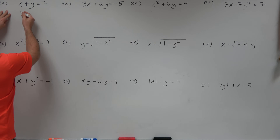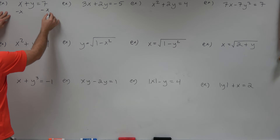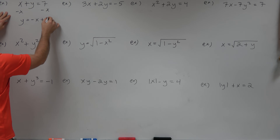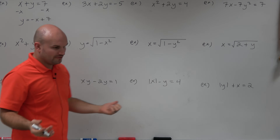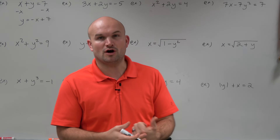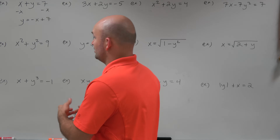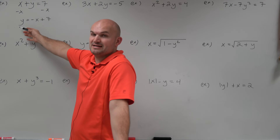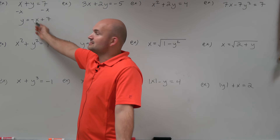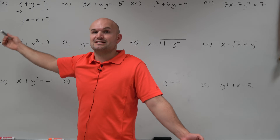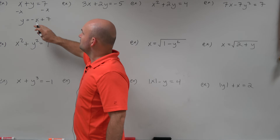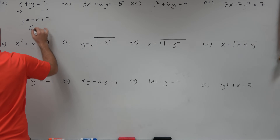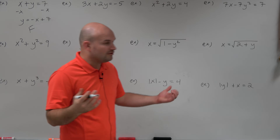The first step for all of these problems is to isolate y and make sure it can be solved uniquely. In this example, I can just subtract x, and I get y equals negative x plus 7. I have solved for y uniquely — for every x value I plug in, I'm always going to get one unique answer for y. So we'll call that a function.